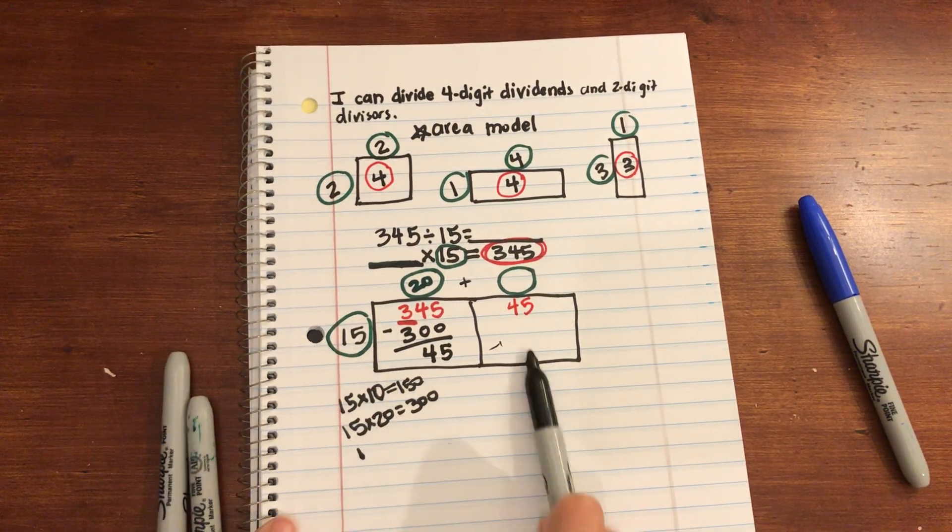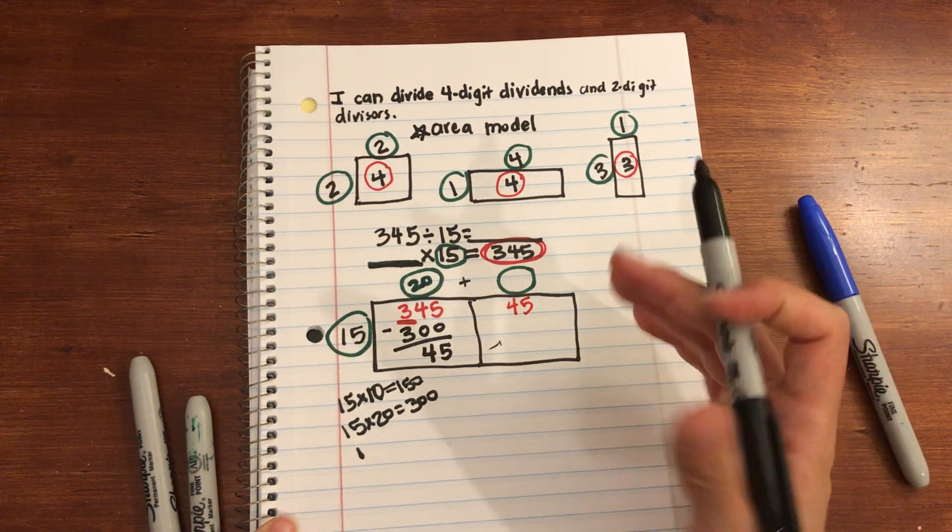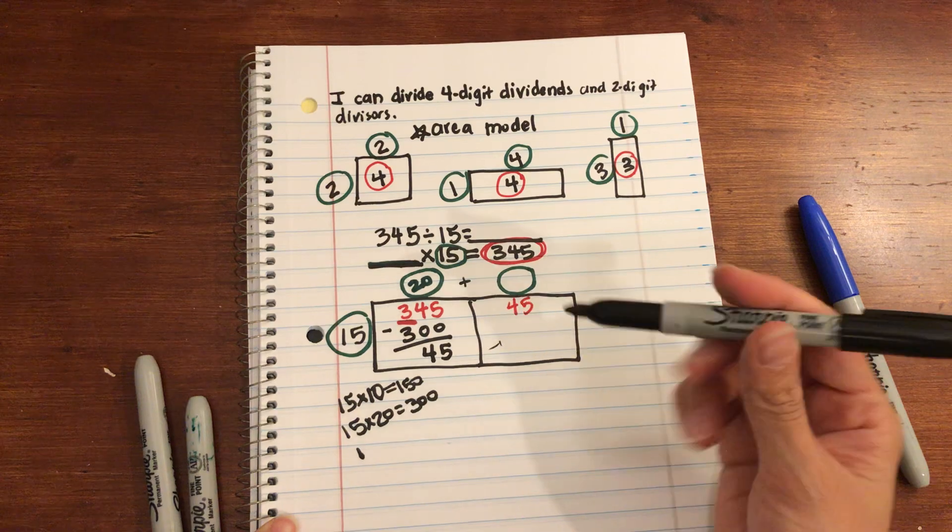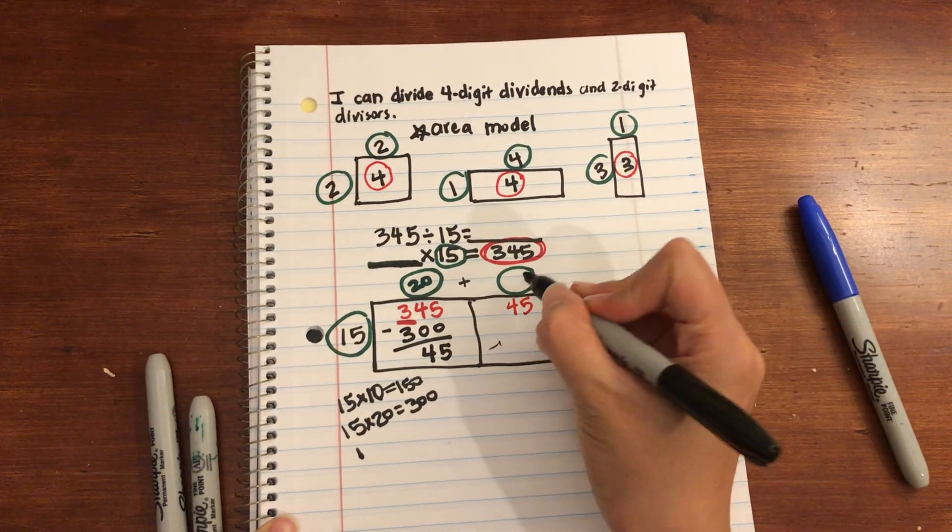How many groups of 15 can go into 45? Oh, I know 15 times 15. Or 15 groups of, three groups of 15. Sorry, not 15 times 15. 15 plus 15 plus 15 is going to be 45.